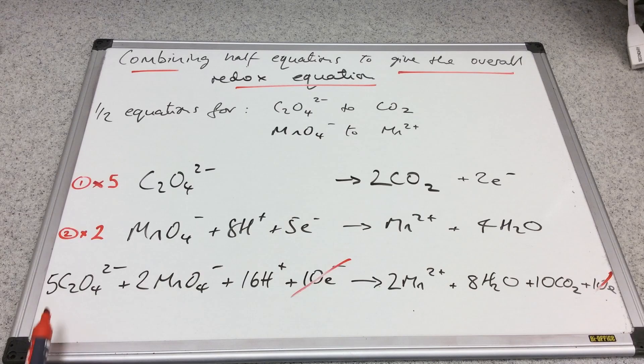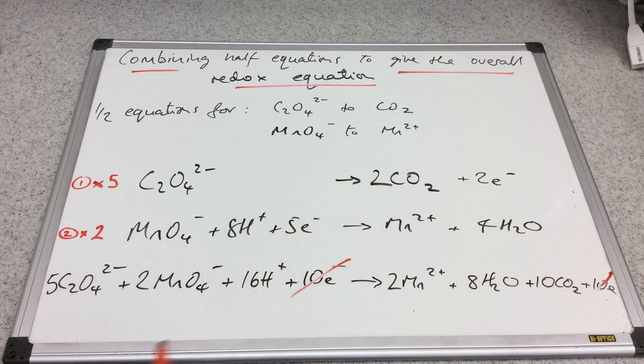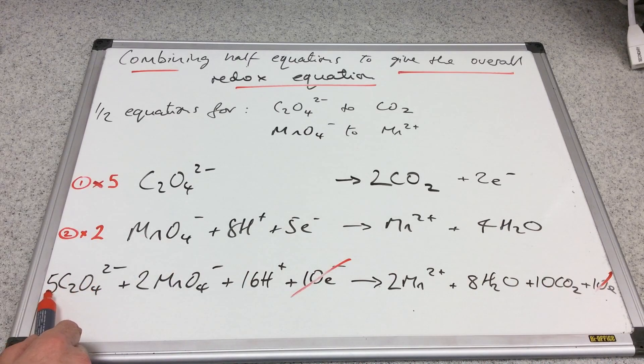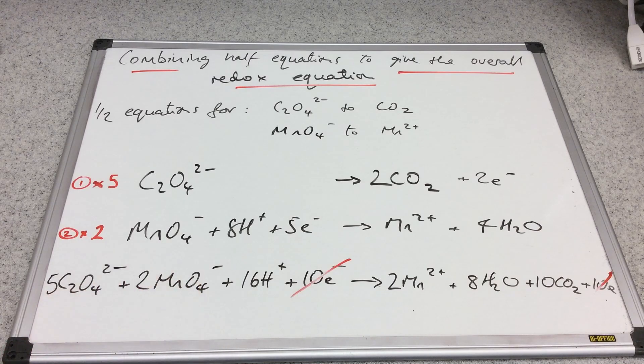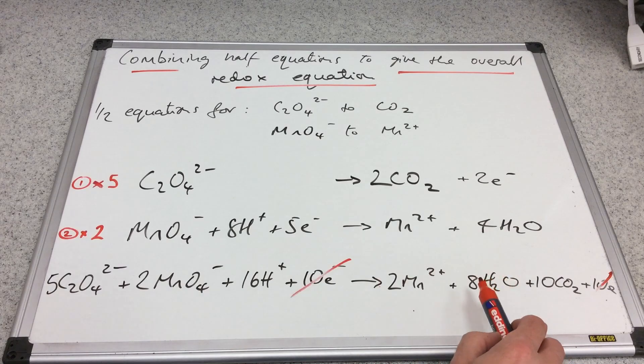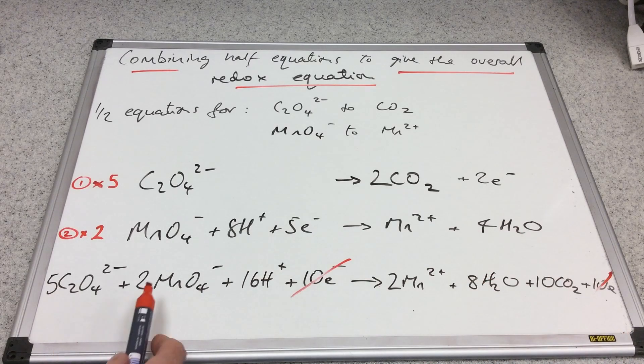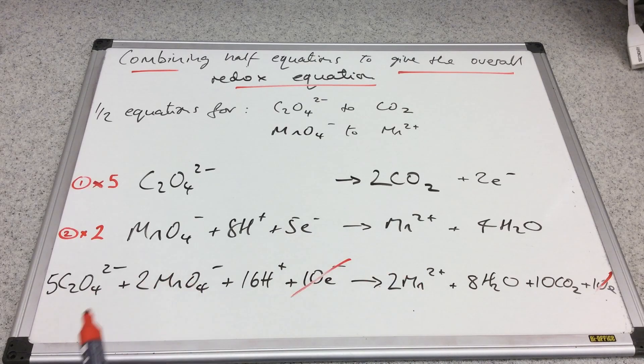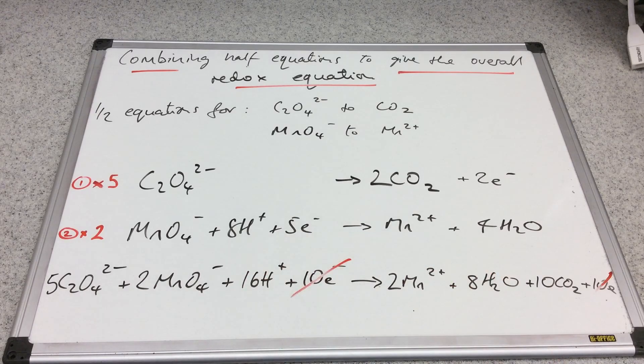We'll just double-check that it all balances. Five times two is 10 carbons, 10 carbons. Four times five is 20 oxygens, plus another eight is 28 oxygens. We've got eight plus 20, that's 28, so that works. Two Mn's, two Mn's. 16 H's, eight twos are 16. So the atoms balance.